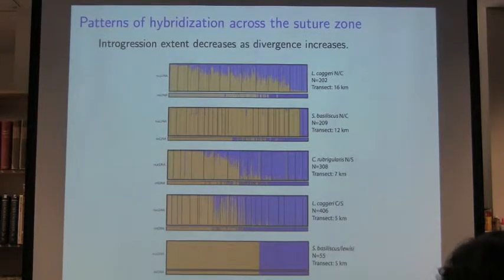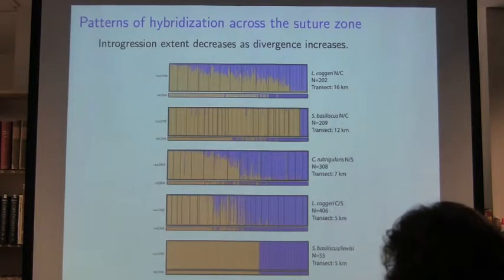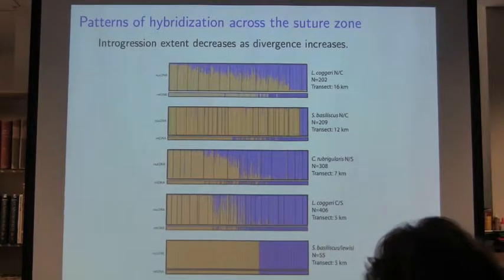In response to a question about divergence times: it's a coalescent-based approach using a molecular clock, so it accounts for coalescence time. These lineages have a complex history where they probably came into contact in the past. The model fit is simpler than what they probably actually experienced. Results are robust whether using divergence time or nuclear divergence — nuclear divergence and divergence time are highly correlated in this system. The divergence times are millions of years old, much older than the last glacial maximum, so it's continued from a much older process.